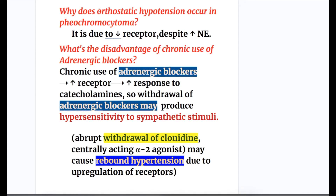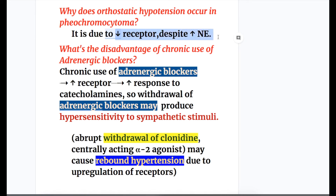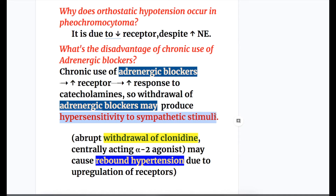Why does orthostatic hypotension occur in pheochromocytoma? It is due to a decreased number of receptors, because there is increased noradrenaline production in pheochromocytoma. Despite increased noradrenaline, orthostatic hypotension occurs due to the decrease in receptor number. Chronic use of adrenergic blockers increases the number of receptors, increasing the response and causing hypersensitivity to sympathetic stimuli on withdrawal.